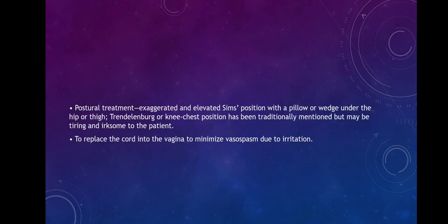Postural treatment includes the exaggerated and elevated Sims position with a pillow placed under the hip or thigh. Trendelenburg or knee-chest position has been traditionally mentioned but may be tiring and extreme for the patient. Then, to replace the cord into the vagina to minimize vasospasm due to irritation. In case the baby is dead, labour is allowed to proceed awaiting spontaneous delivery. That concludes the discussion on cord accidents — if you have any questions, feel free to comment. Thank you for watching.